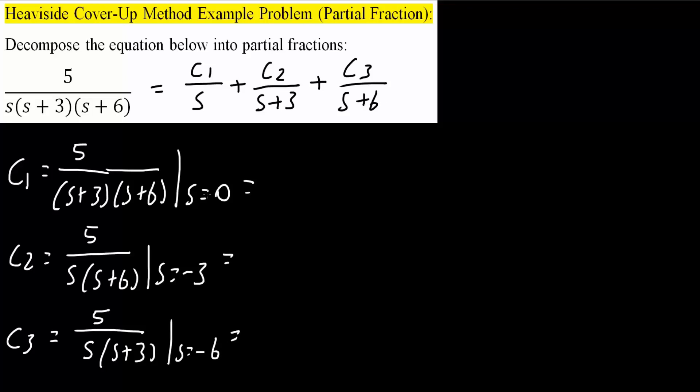And now we're going to plug in s is zero, s is negative three, and s is negative six for each of these three equations. So if I plug in zero for the first one, we would get five divided by three times six. So that would be five over 18.